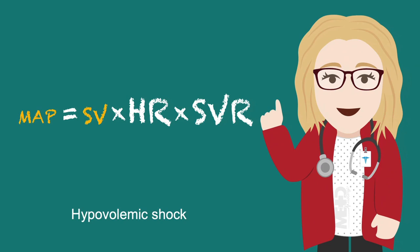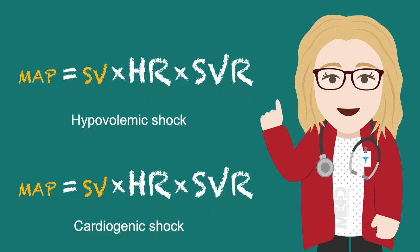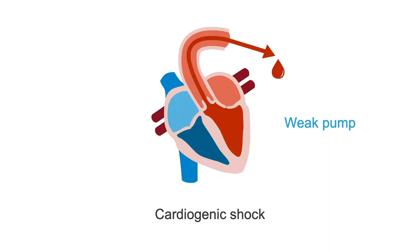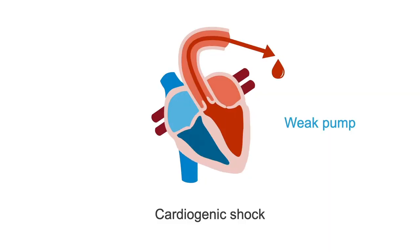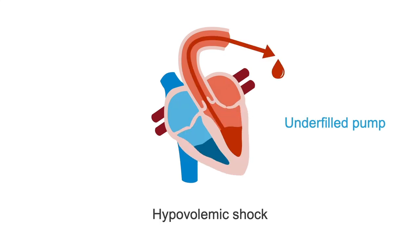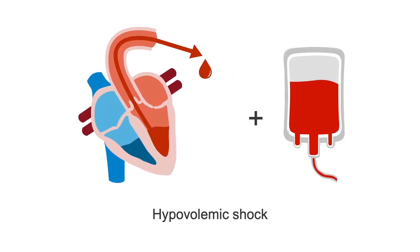But isn't that exactly the same as cardiogenic shock? If we are just looking at this simple equation, then yes — stroke volume is low in both hypovolemic and cardiogenic shock. But the reason the stroke volume is low differs. In cardiogenic shock, it's due to a weak pump, so adding extra volume won't help that weak pump. But in hypovolemic shock, it's due to an underfilled pump, so adding extra volume will solve the problem.